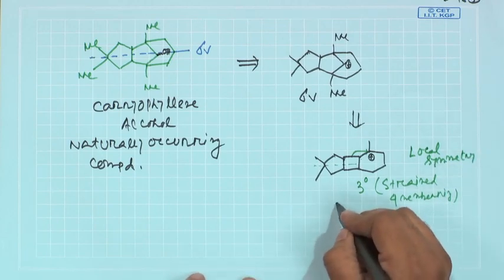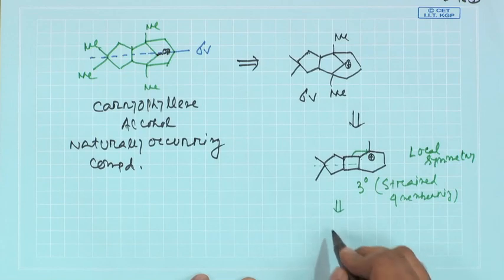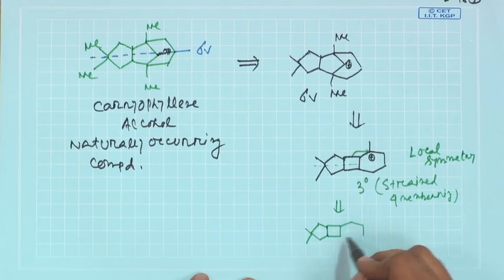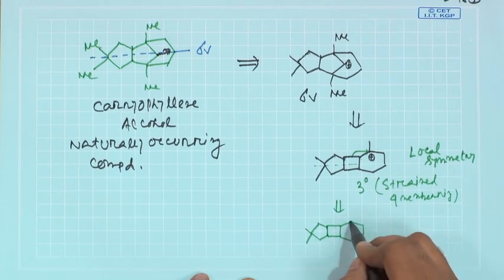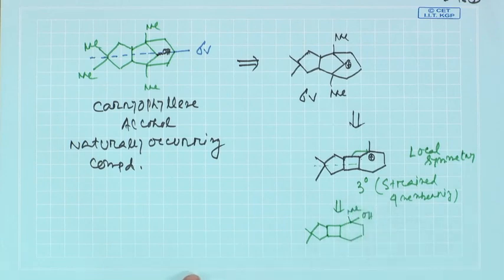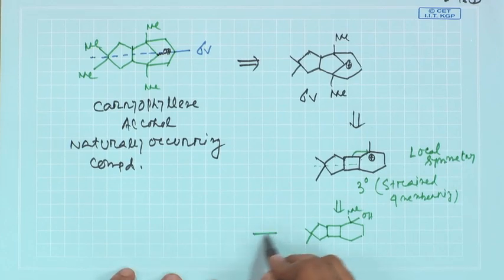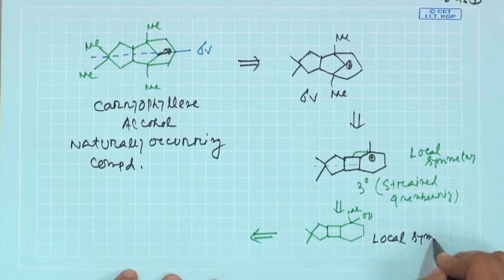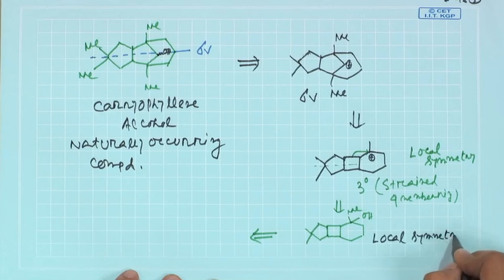This compound can easily be prepared starting from this methyl and this OH, just by water removal. This compound again has local symmetry as well as pseudo symmetry — this part is local symmetry, this part is pseudo symmetry.